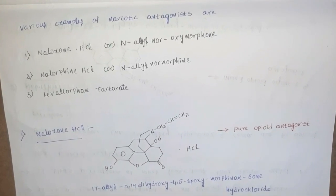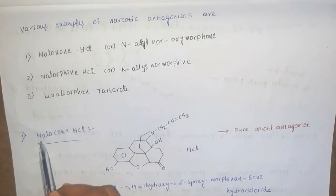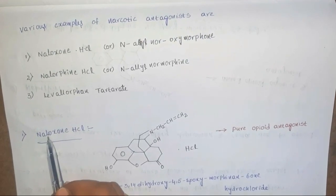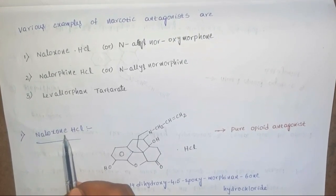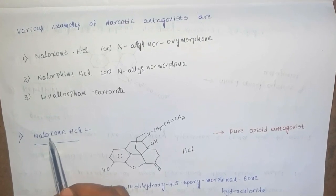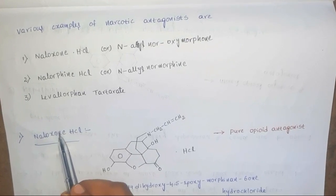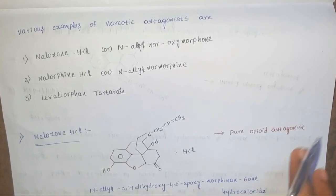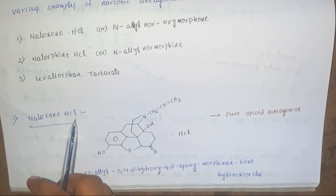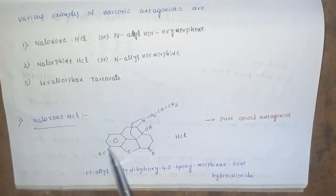Coming to the first example, naloxone hydrochloride. N means nitrogen which is directly attached to an allyl group, and it contains an oxone — meaning the 14th position contains an OH group and the 6th position contains a double bond oxygen. That is called as naloxone hydrochloride. This is the structure of naloxone hydrochloride.